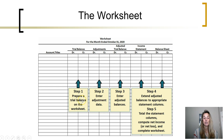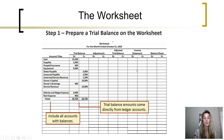The first step is to prepare the trial balance on the worksheet. The trial balance is simply the list of accounts and their balances at the end of the accounting period from the general ledger. These are the accounts the company uses. As of the end of the period, before any adjustments have been made, these are the balances in the accounts. Total debit balances equal total credit balances.